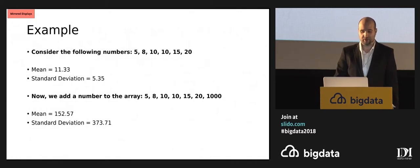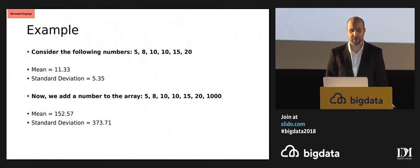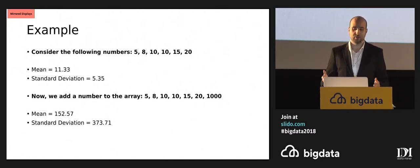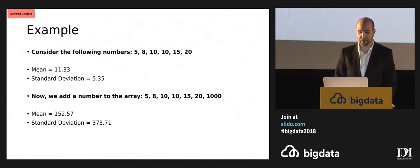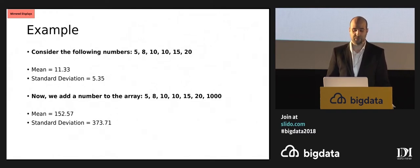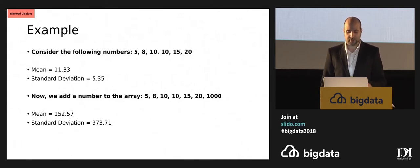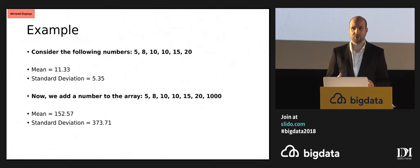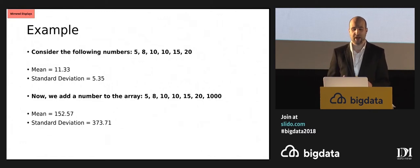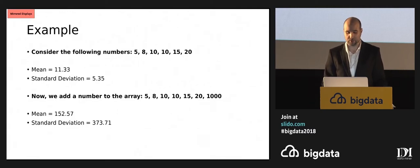Just as an example, if you consider the following array of numbers: 5, 8, 10, 10, 15, and 20 — we calculate our mean and standard deviation. Now we add one number to the array, in this case 1,000, and we see that our mean and standard deviation have deviated dramatically. If we're trying to generate an analysis, the shape of our distribution is going to have changed, and that's going to affect the types of models we run and the validity of those models.